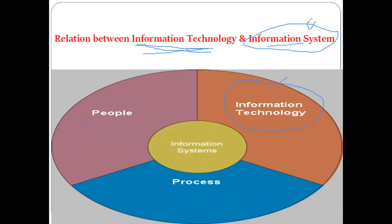Information system is not just the use of computer hardware and computer software. Information system is nothing but a set of related components, and in that set of related components, information technology is one component. Information system is a set of related components used for collection, storage, processing, and distribution of information. One of those components is information technology — that is, computer hardware and computer software.